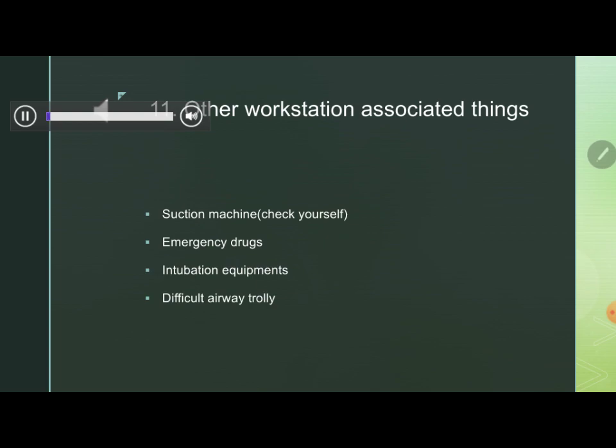Also check other anesthesia workstation-related things such as the suction machine — check it yourself, do not rely on any other person. Do not just check its structural presence; check its functional integrity by switching it off and on. Check the presence of emergency drugs at the start of each case. The intubation trolley should be completely checked from A to Z before starting: check the laryngoscope and its light and blades, ensure three different sizes of endotracheal tubes are present, check for backup supraglottic airway devices, and if a difficult airway is anticipated, the difficult airway trolley should be prepared as well.